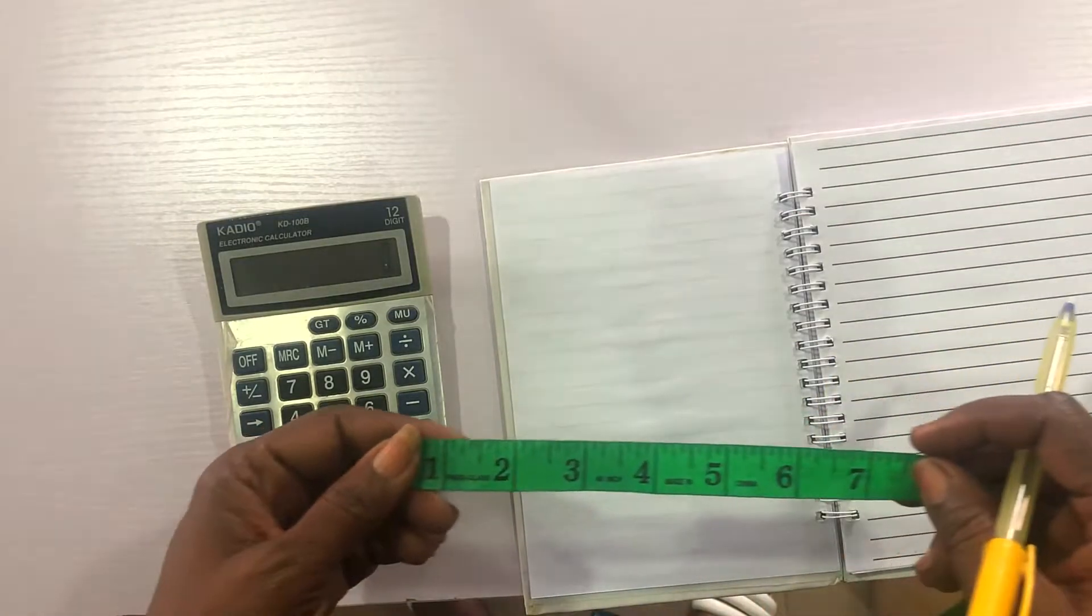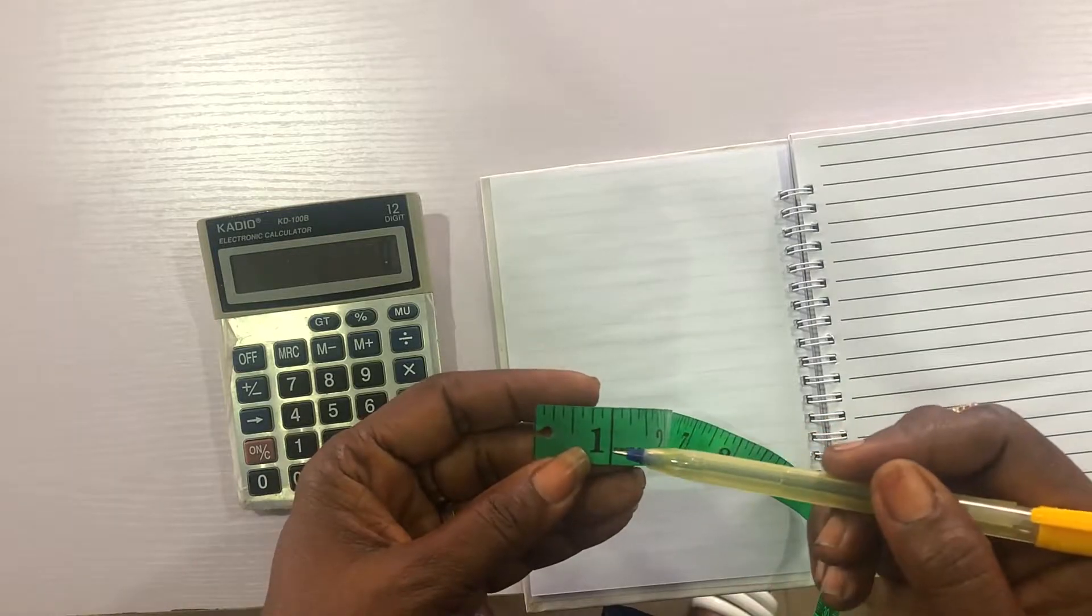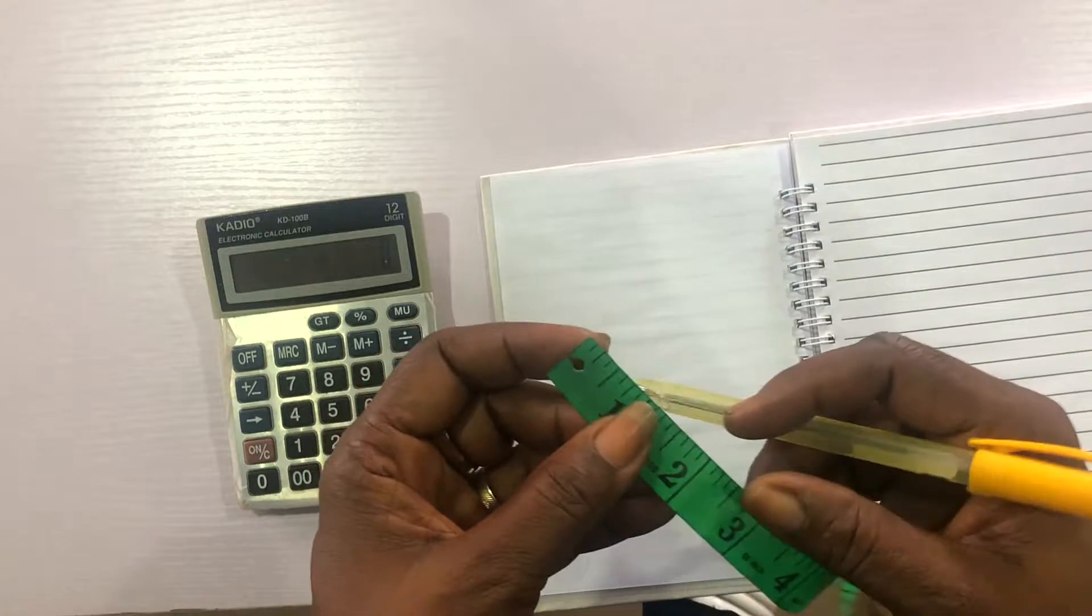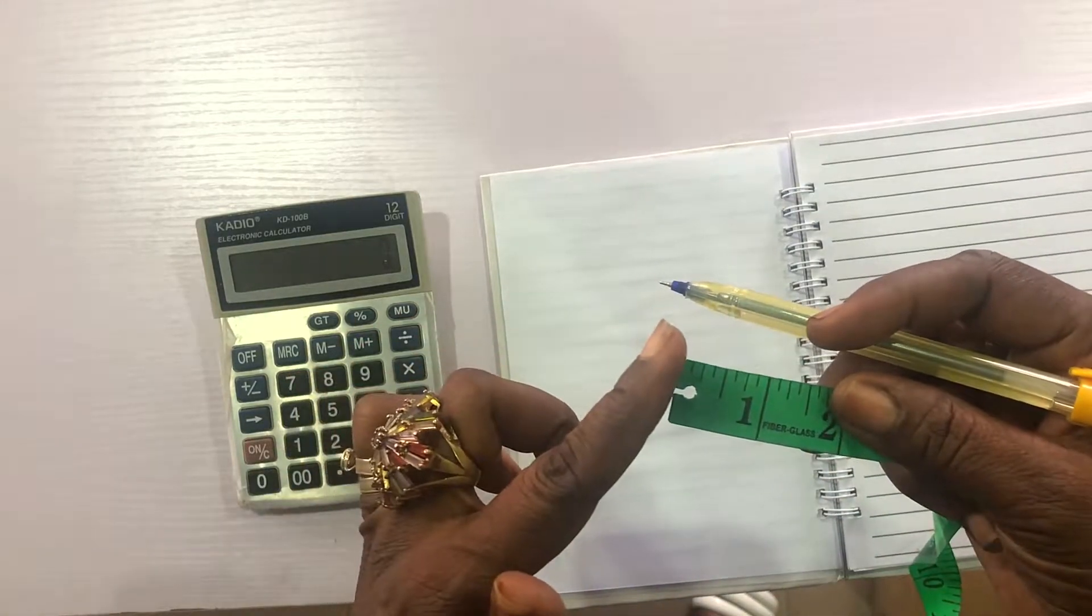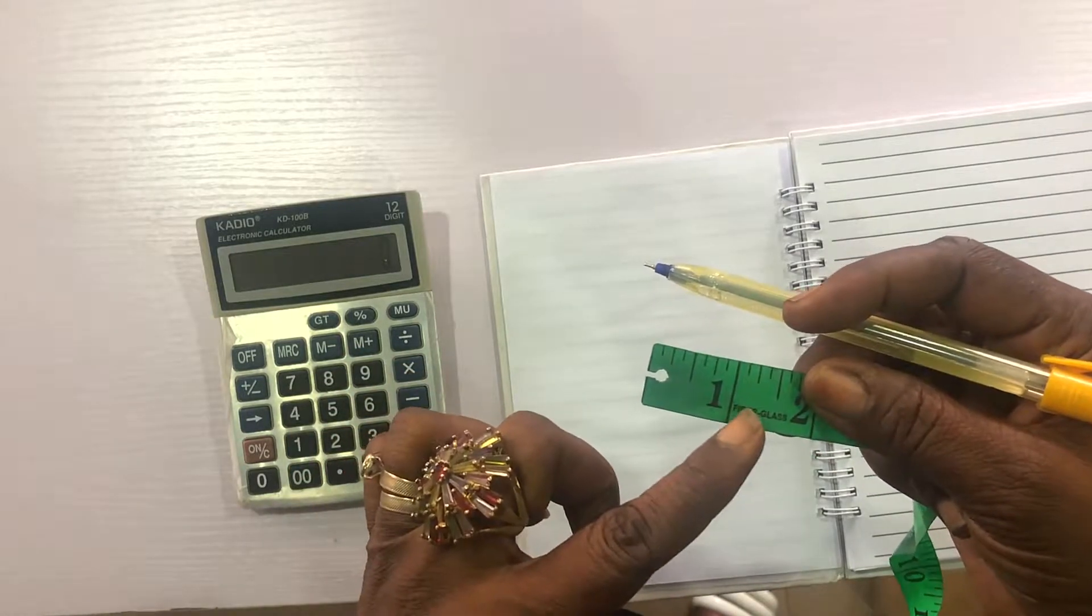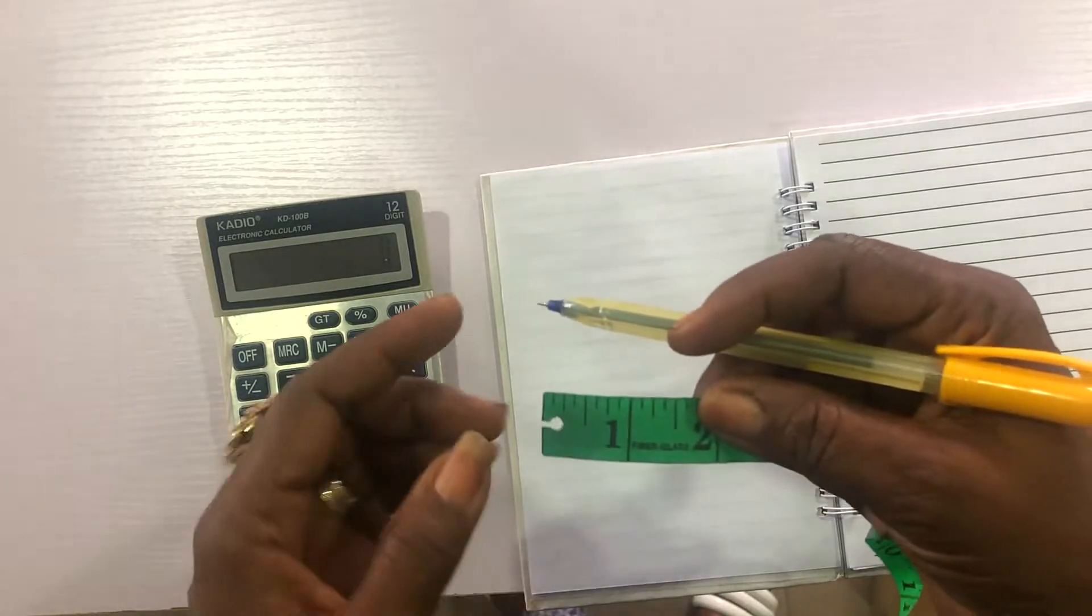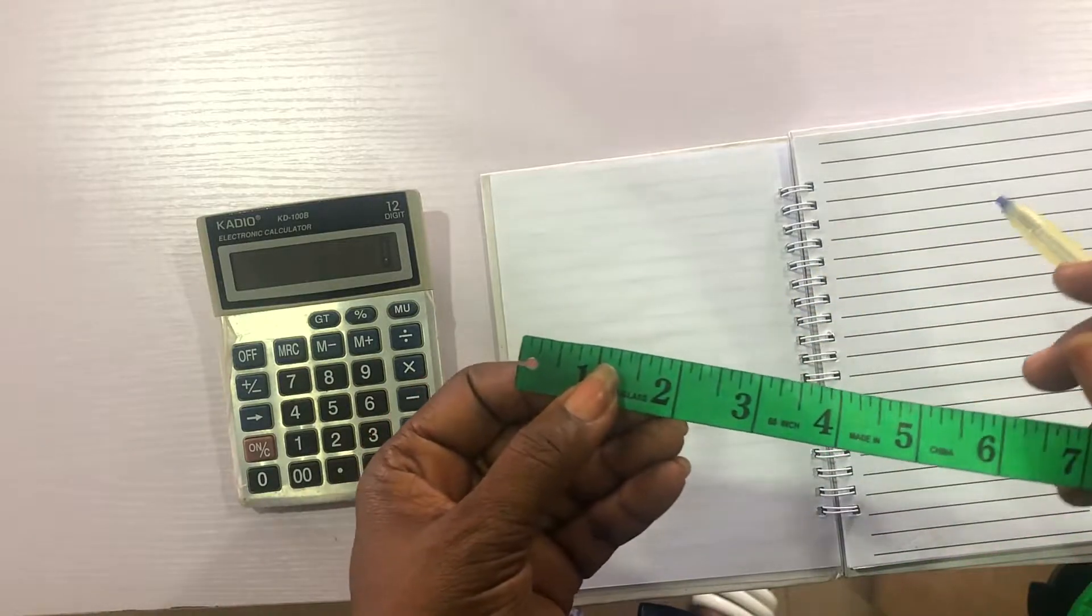Right now, we are going straight to the lesson of today. Our tape rule starts from - if you look at my own tape rule here, I removed the metal head because we discovered in some tape, we have metal head with some other inches. Now, when you put it on your material, it will give you a different inch instead of an inch. So, because of that, we remove our metal head to get the actual inches we want.